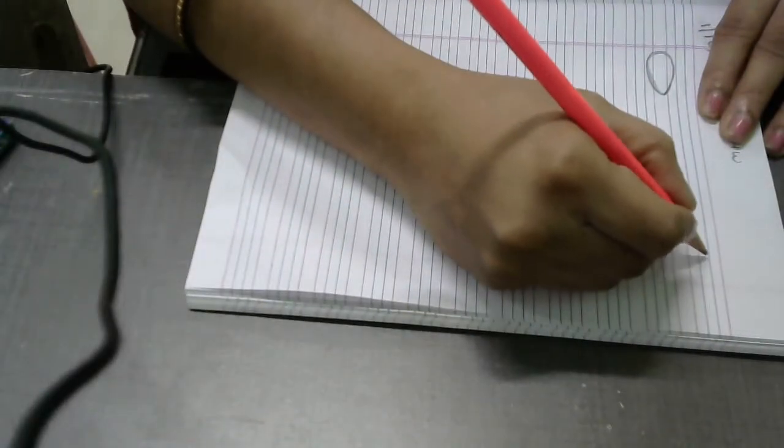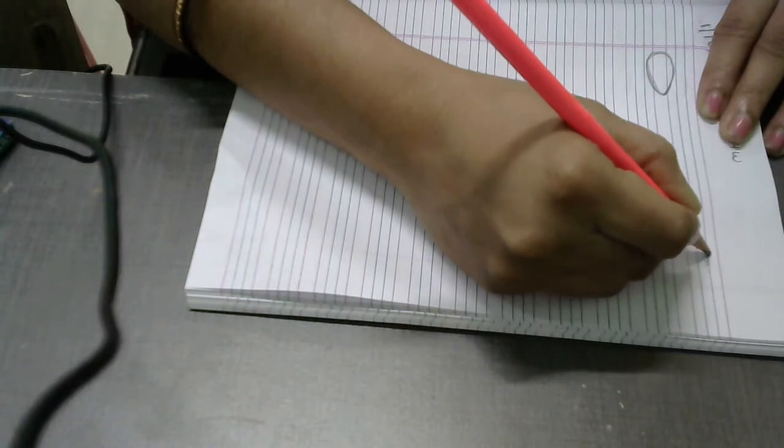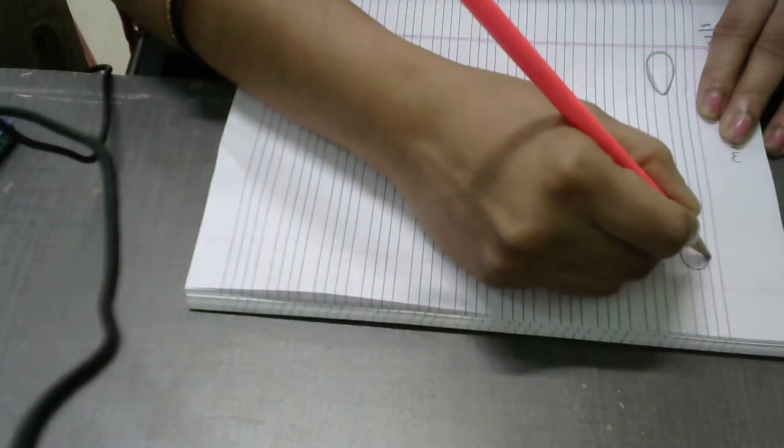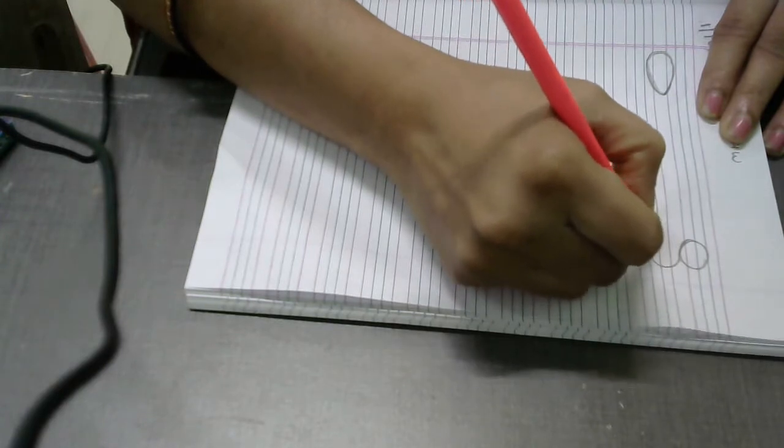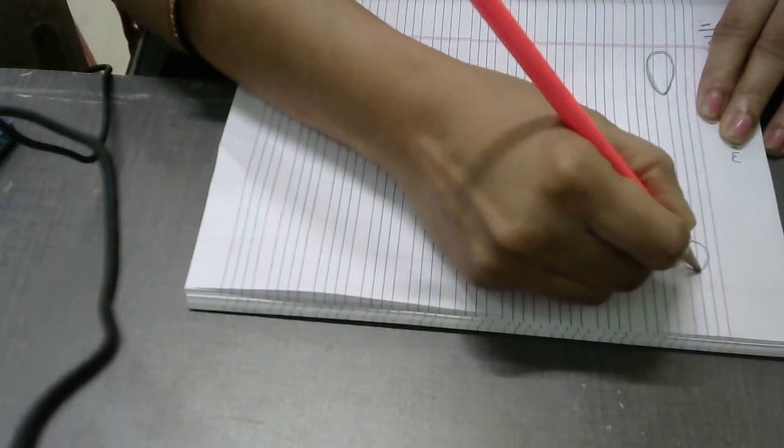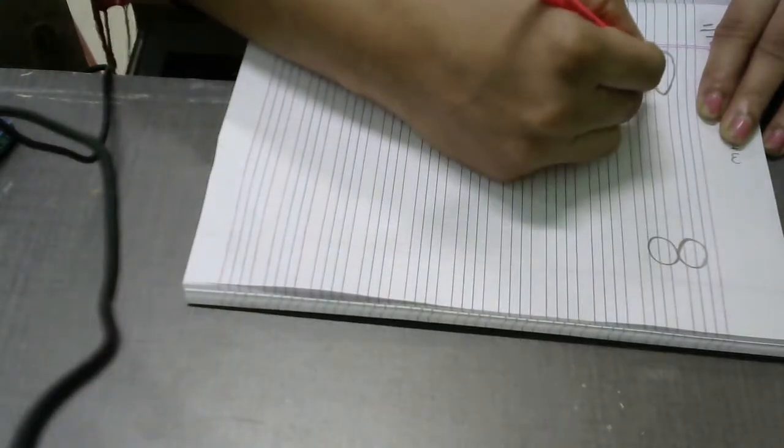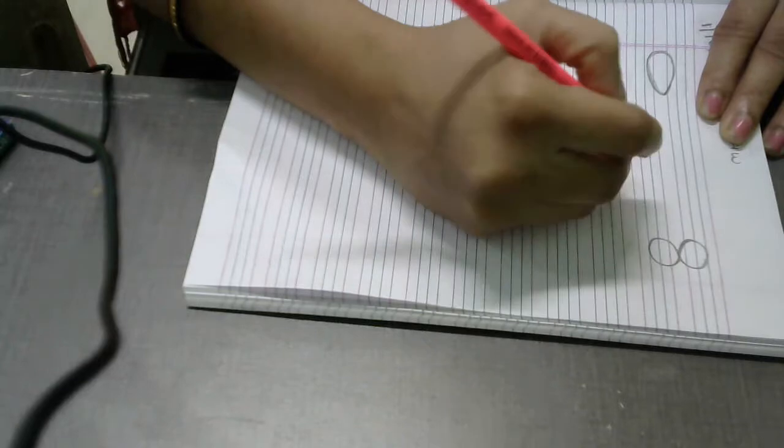E for egg. And then we are going to draw number 8 because it also starts with the letter 8. Draw a picture of number 8. E for egg.